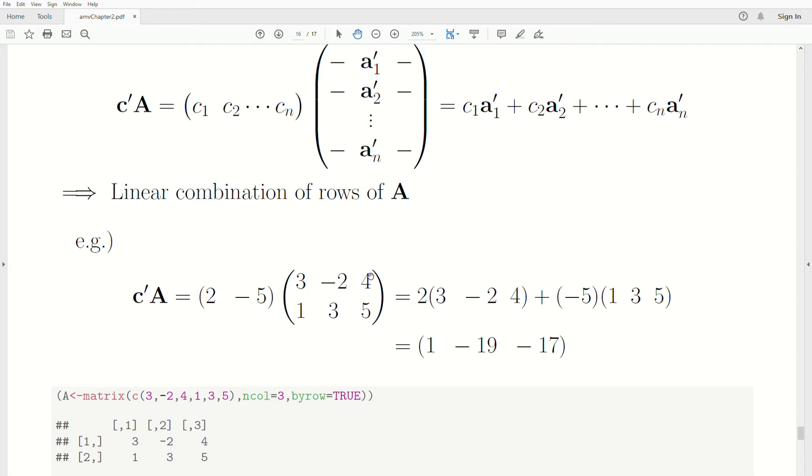Or you could take two times this first row, that's what this represents, and then minus five times the second row. So multiply the scalar in, and then add the vectors, and you get this.